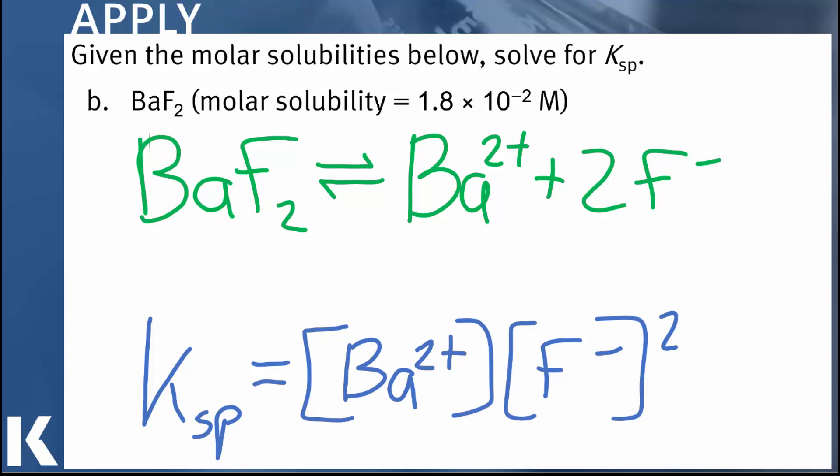But there's a little wrinkle in this one. Notice that the fluorine has twice as many ions in solution as there are barium ions, and that's just because of the stoichiometry of the compound. But the impact that that's going to have on us is that if we have X standing for, again, the molar solubility, for every mole of barium fluoride that dissolves, we're going to get the same number of moles of barium, but we're going to get twice as many moles of fluorine. That's just the stoichiometry.